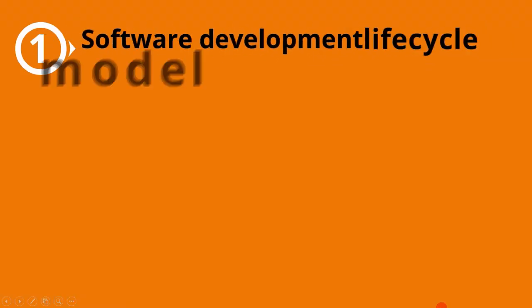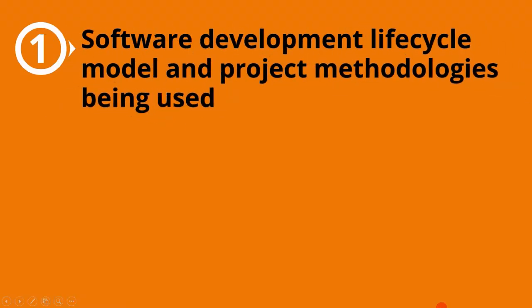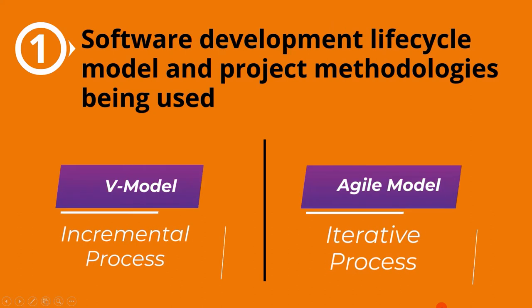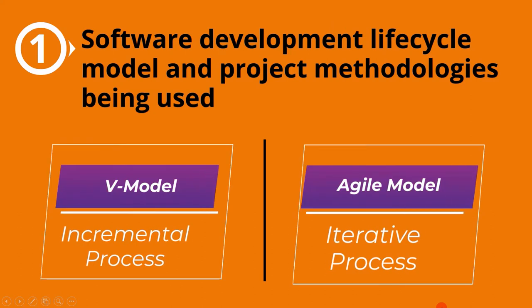The first context is based on software development lifecycle models and project methodologies being used. To understand this point, let's look at two software development lifecycle models: the V-model and the Agile model. The V-model is an incremental process where all phases are done sequentially. However, in an Agile model, each phase is repeated throughout the development lifecycle.